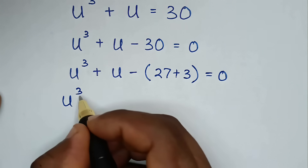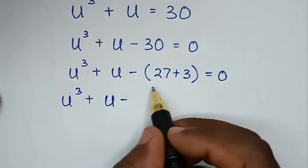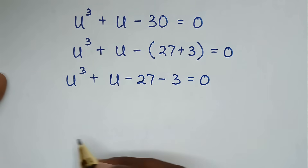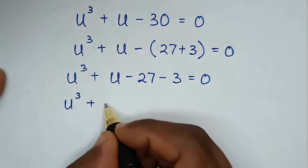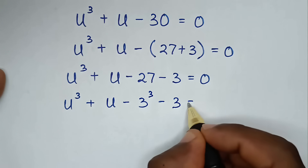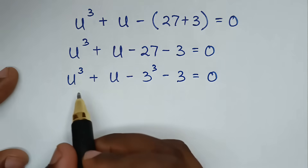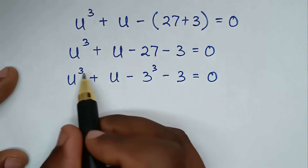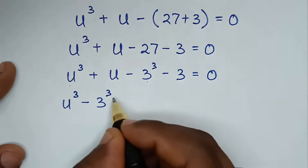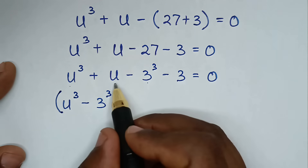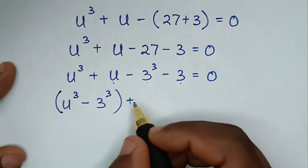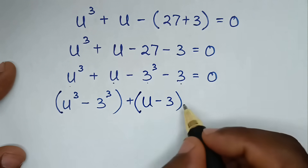So it will be u³ + u - 27 - 3 = 0. Now, 27 is the same as 3³, so we rewrite as u³ - 3³ + u - 3 = 0. We group the cubic terms together and the linear terms together, giving (u³ - 3³) + (u - 3) = 0.